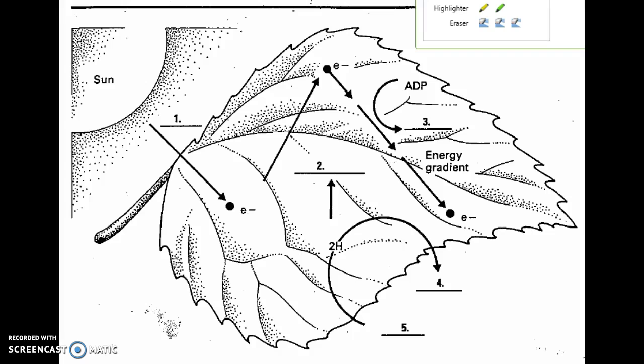It starts off with the Sun, which is going to hit the plant and be absorbed by the chlorophyll that's in the thylakoid membranes of the chloroplast. So we'll put Sun here, or radiant energy.